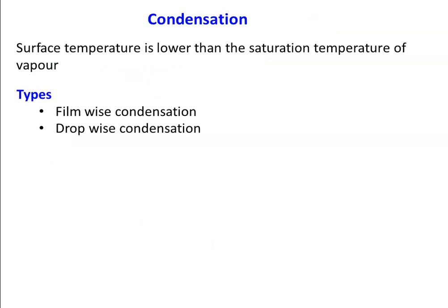Condensation is converting the vapor into liquid. In the boiler plant, there is a device called the condenser where the low-pressure steam from the turbine enters and the steam is cooled and converted into condensate or water. So when the vapor is cooled below its saturation temperature at a particular pressure, the vapor is converted into liquid.